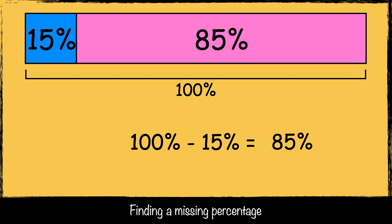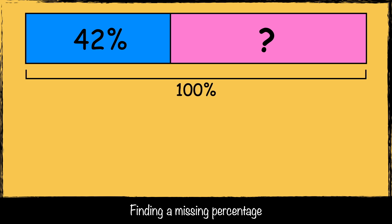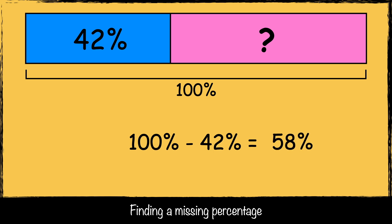Here's the second challenge: 42% of this shape is blue, but what percentage of the shape is pink? Remember, the whole shape should add up to 100%. To find the missing percentage, we subtract 42 from 100. A hundred take away 42 is 58, so the missing percentage in this challenge is 58%.